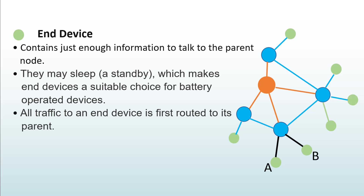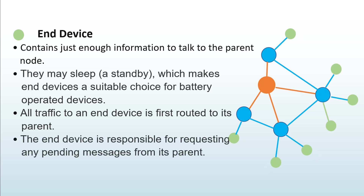All traffic to an end device is first routed to its parent. For example, device A cannot transmit directly to device B — data must go through the router. If device B is asleep, the transmitted data is stored in the router until device B is active again. The end device is responsible for requesting any pending messages from its parent when it wakes up.